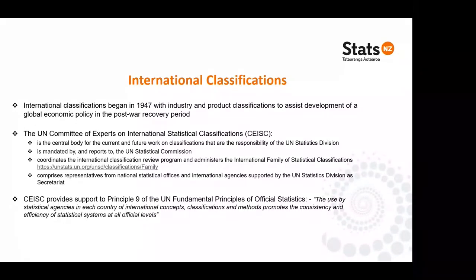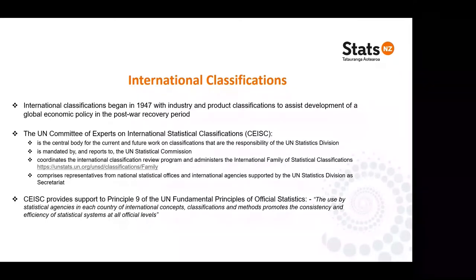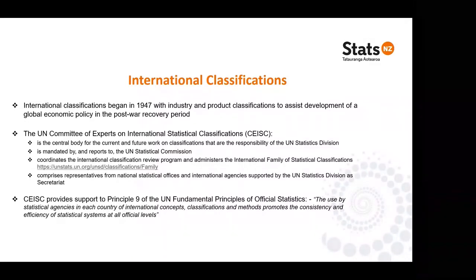The Committee is mandated by and reports to the UN Statistical Commission. The Commission meets every year and is a collection of all the national chief statisticians around the world and executives from major international agencies like the OECD, International Monetary Fund, and World Bank. Every two years the Committee puts forth a report saying this is what we've been doing and requests permission to undertake revisions and get direction on the work programme. The Committee also coordinates the international review programme for all agencies and administers the international family of statistical classifications found on the UN website.